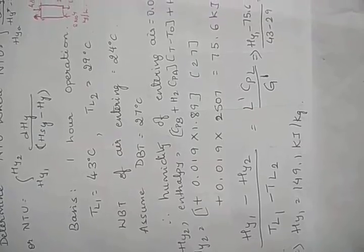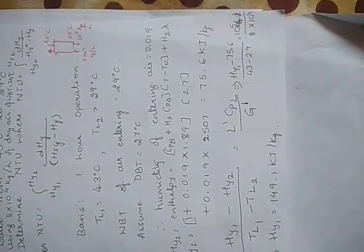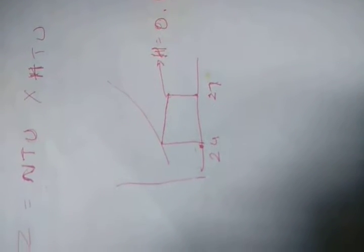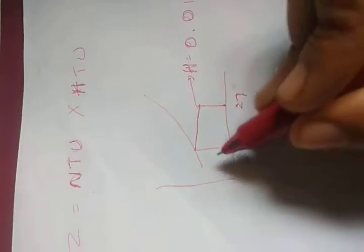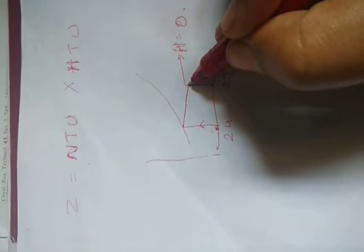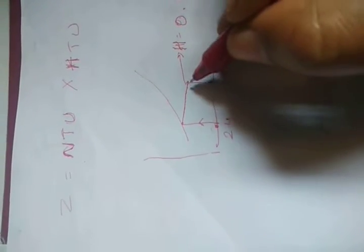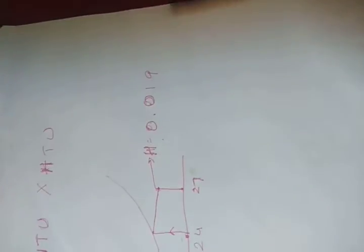Since the dry bulb temperature is not given, we assume it to be 27°C. From the WBT and DBT we can find the humidity of the entering air using the humidity chart. With DBT of 27°C and WBT of 24°C, we move upward from 24°C to the 100% humidity curve, then follow the adiabatic saturation curve to the dry bulb temperature, giving humidity as 0.019 kg water vapor per kg dry air.